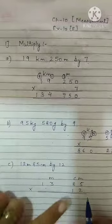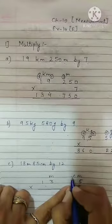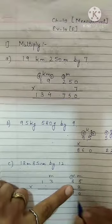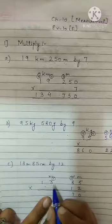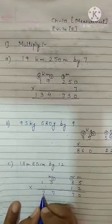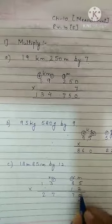First of all, we will multiply this number with 2. 2 fives are 10, write 0, 1 carrying over. 2 eights are 16 plus 1, 17, write 7. And 1 carrying over. 2 threes are 6 plus 1, 7. 2 ones are 2. Now we have multiplied with 2. So that's why I am writing cross. This place is over.